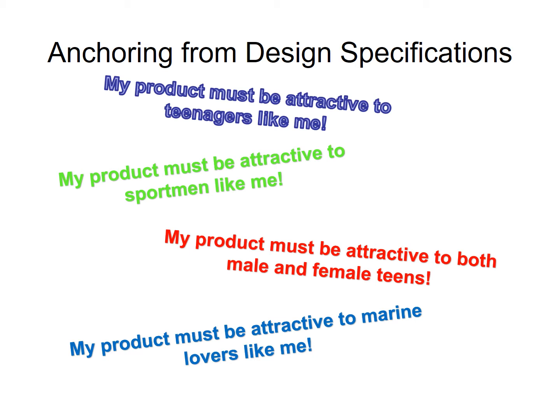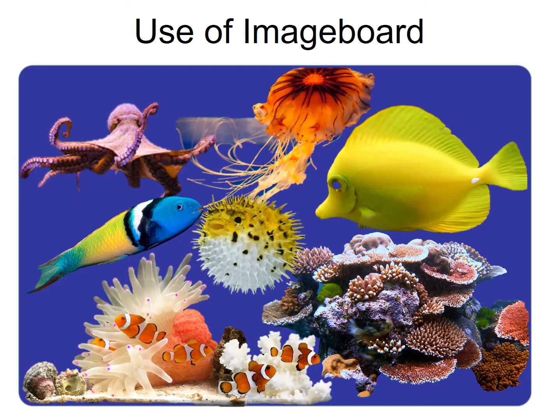So it can be tennis, it can be badminton, it can be swimming. All these things you will draw your inspirations and images from when it comes to the design of the look of your product. So how do you begin actually looking into the shapes? Supposedly I am a marine lover, and basically my design spec will be looking into designing a product aesthetically attractive to people who love marine life — who are marine lovers.